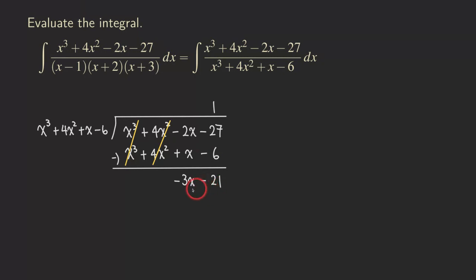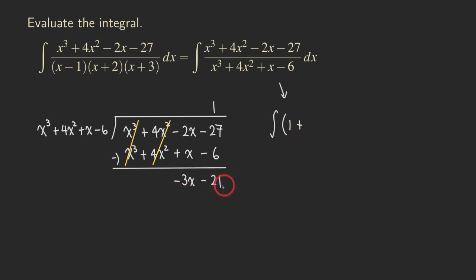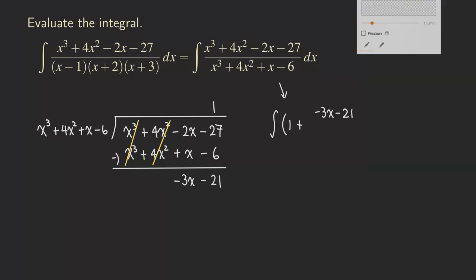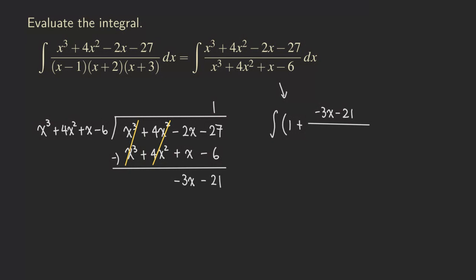So now this is done. The degree for the remainder is actually smaller than the degree for the divisor, so we cannot continue with the long division anymore. We are going to rewrite this whole function as the integral of 1 plus the fraction with negative 3x minus 21 in the numerator, over the denominator x cubed plus 4x squared plus x minus 6, dx.